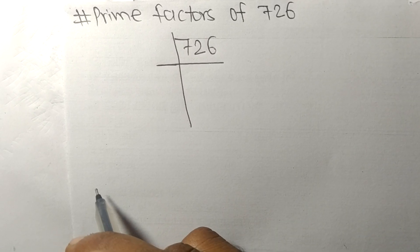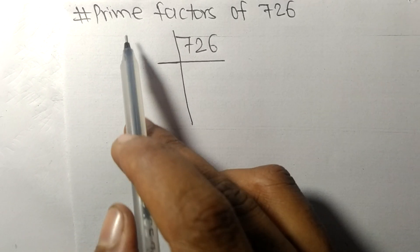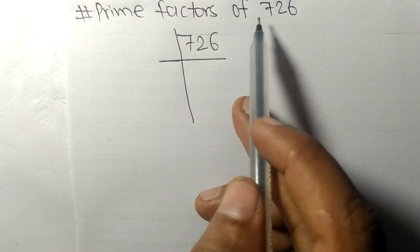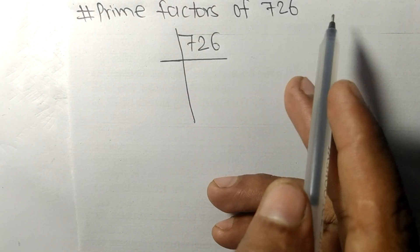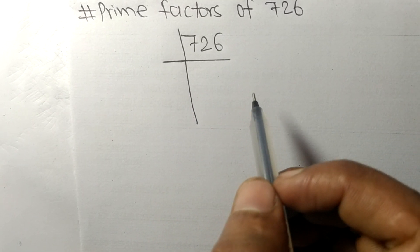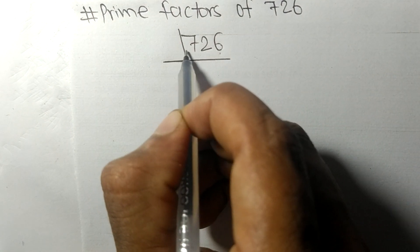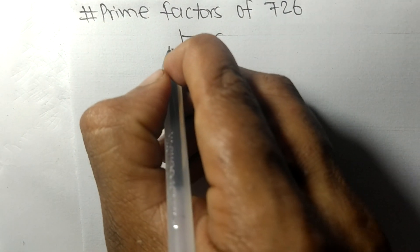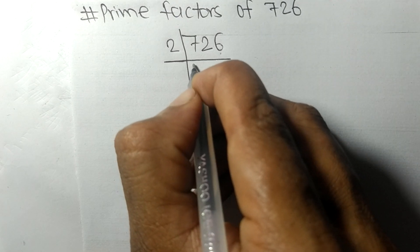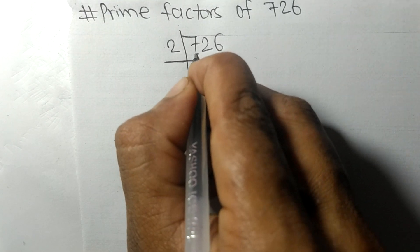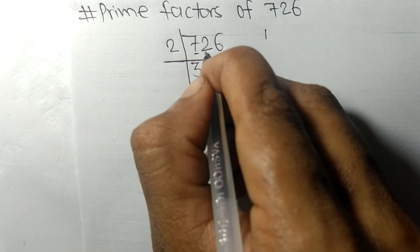So today in this video we shall learn to find the prime factors of 726. It contains an even number 6, so the whole number is divisible by 2. 2 times 3 equals 6 remainder 1.